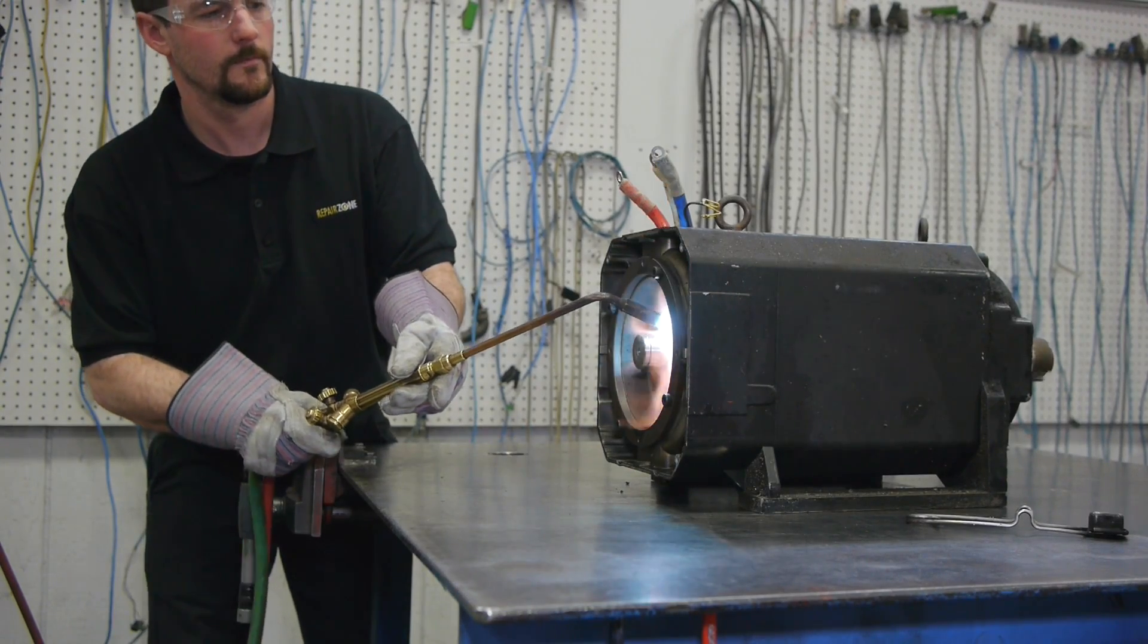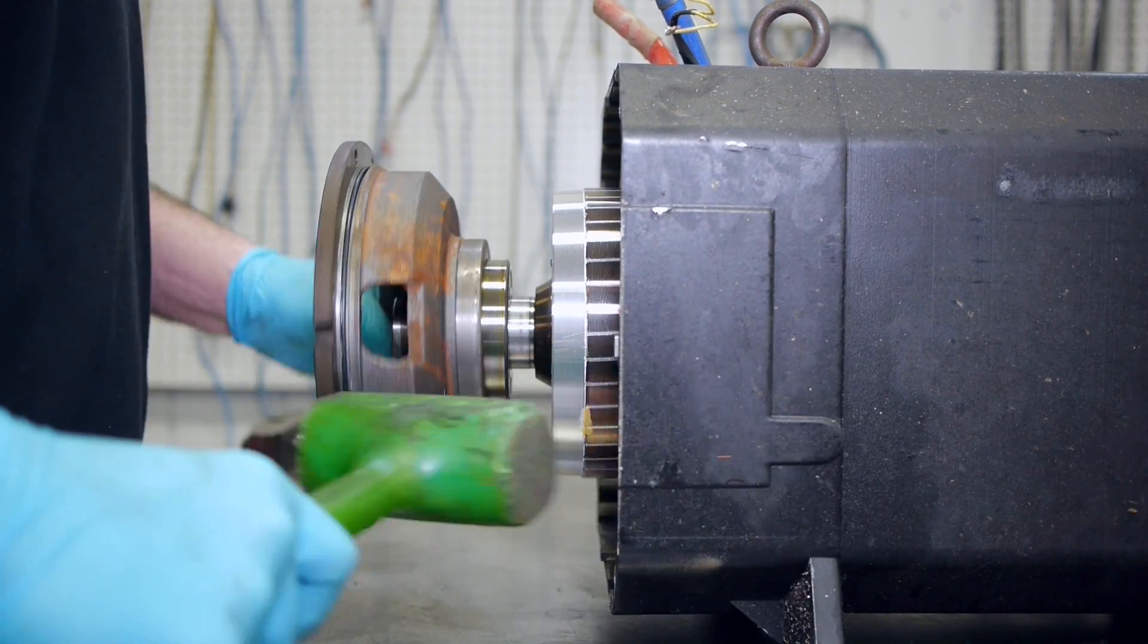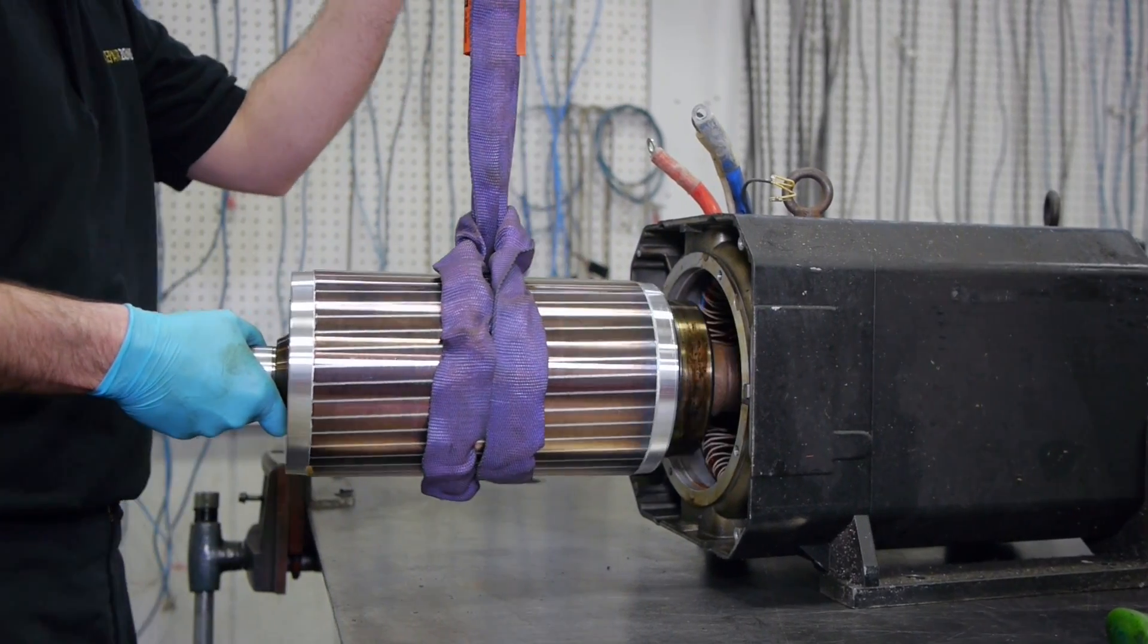We then remove the speed sensor wheel by applying heat, along with the opposite pulley end bell. The rotor is removed from the stator and the bad bearings are removed.